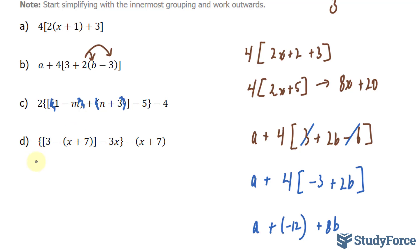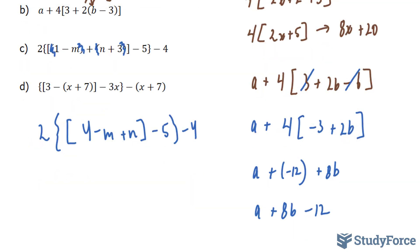So we have 2{[4 - m + n] - 5} - 4. At this stage, we can even remove the square brackets because there's no factor being multiplied to it. After removing them, we can combine 4 and -5.